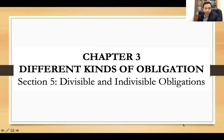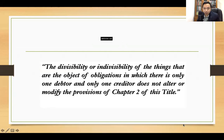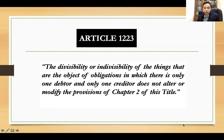We go to chapter three, different kinds of obligation, section five, divisible and indivisible obligation. We start with Article 1223: the divisibility or indivisibility of the things that are the object of obligations in which there is only one debtor and only one creditor does not alter or modify the provisions of chapter two of this title.